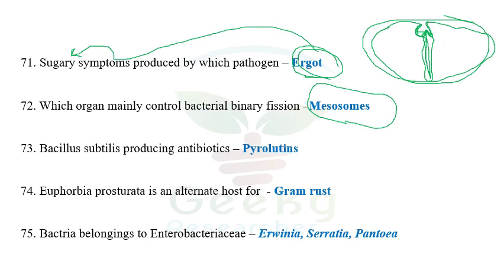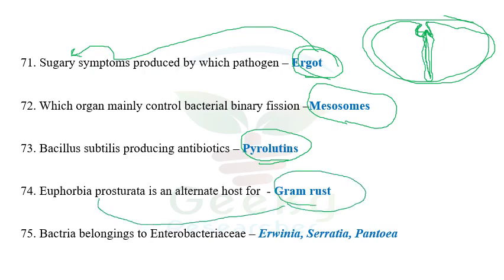The next question: Bacillus subtilis produces which antibiotic? Among the given options, pyrolutein seems to be the reliable option. Bacillus subtilis produces an antibiotic called pyrolutein, though it produces other compounds as well. The next question: Euphorbia prostrata is an alternate host for gram rust — also one of the important questions.